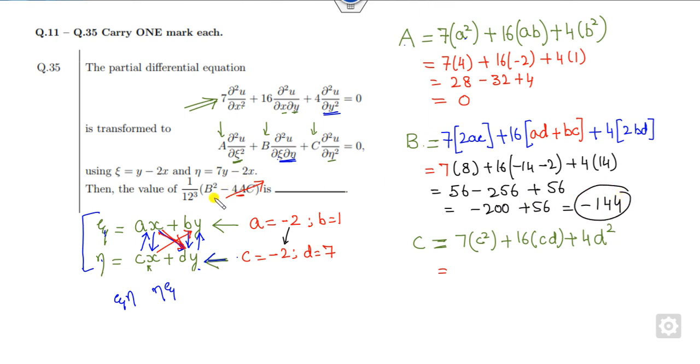So I can substitute this value here. So that is nothing but b² upon 12³. So b² is nothing but -12² of this divided by 12³. The answer is 12 is the right answer.